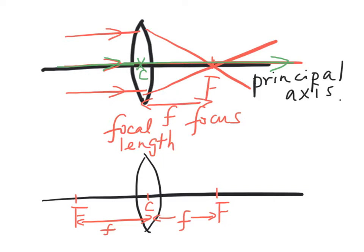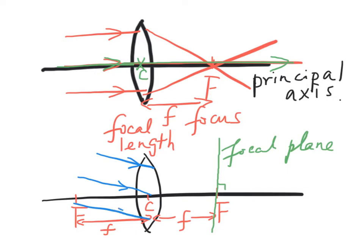The plane passing through the center of the lens and perpendicular to the principal axis is called the focal plane. Parallel light waves passing through the convex lens will converge at a point on the focal plane.